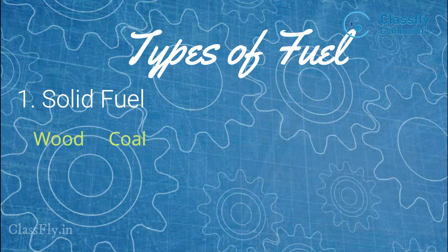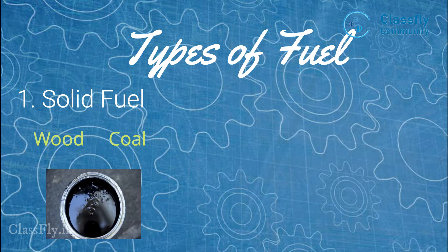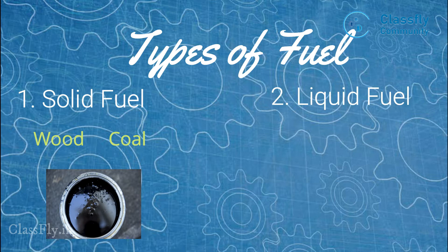Next comes coal, in which the main components are pulverized coal and coke, both of which are used abundantly in the construction of roads, and we can see it in the form of tar. Moving on to liquid fuels — it is a type of fuel which is present in a liquid form.